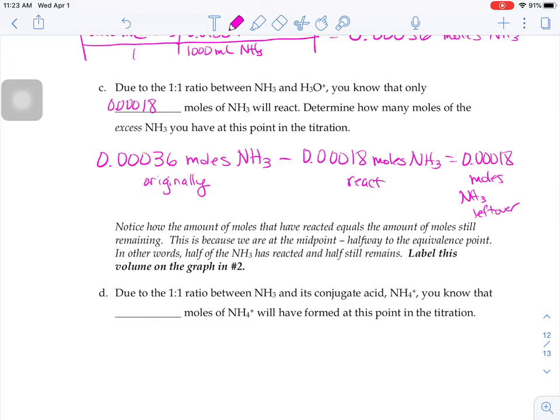It wants to point out to you, notice how the amount of moles that have reacted equals the amount of moles still remaining. This is because we are at the midpoint, halfway to the equivalence point. In other words, half of the NH3 has reacted, half of it still remains. That's a special point on a titration curve, the midpoint.